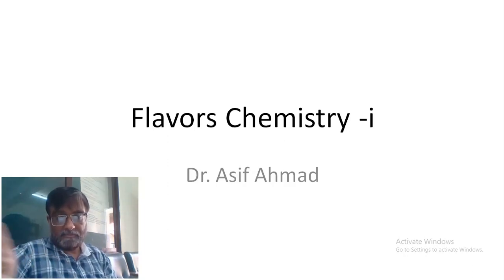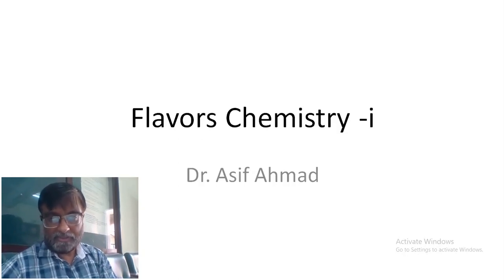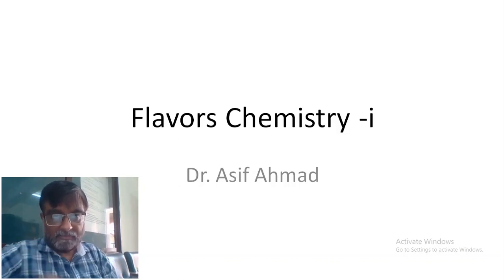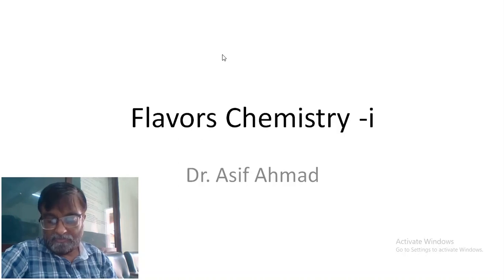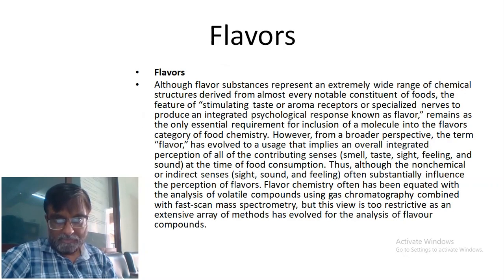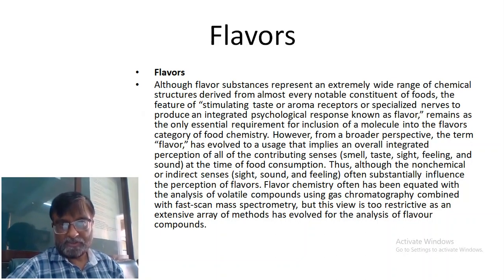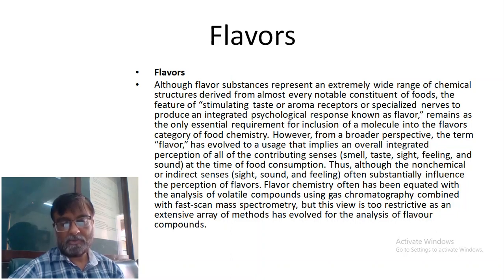Today we will be discussing flavor chemistry. Flavor substances are available in different forms in different food items. These flavor substances represent an extremely wide range of chemical structures and can be derived from most foods — from amino acids, from carbohydrates, from organic acids, and so on.